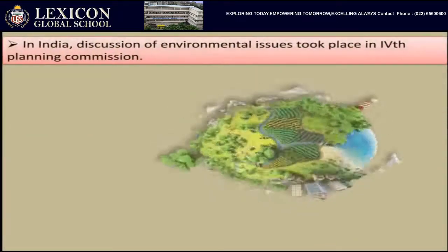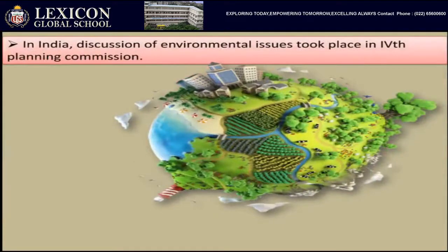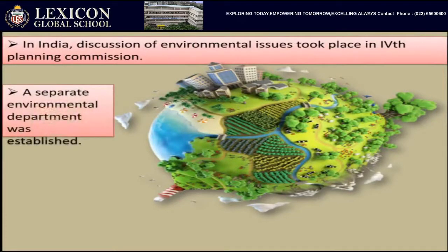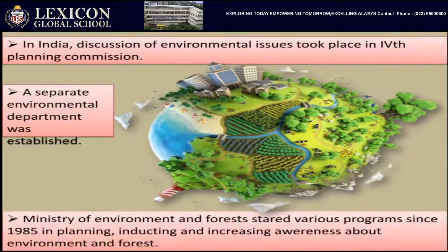The Government of India has also taken initiative to conserve the environment. During the fourth commission plan, they came across various environmental issues and decided to form a separate department for environment. This department stated various laws, started creating awareness, and telling people what damage is being caused and what should be done to conserve the environment.